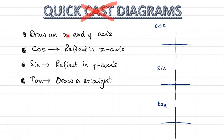Just remember: draw an x and y axis. If solving for cos, reflect the calculator angle in the x axis. If solving for sine, reflect the first angle in the y axis. If solving for tan, continue a straight line from the first solution. Cos comes before sine — C before S, X before Y. And if you want to tan, you lay down straight.